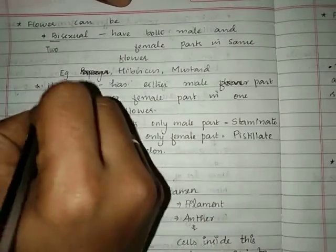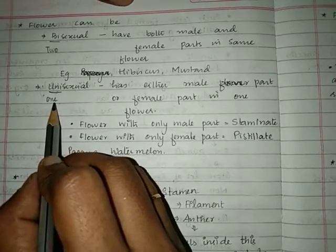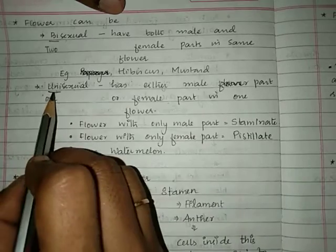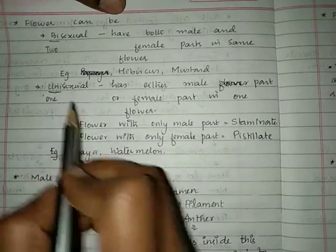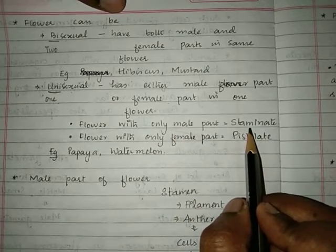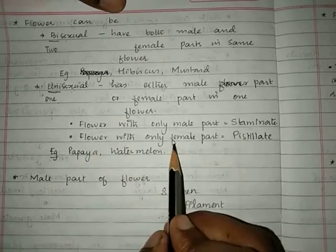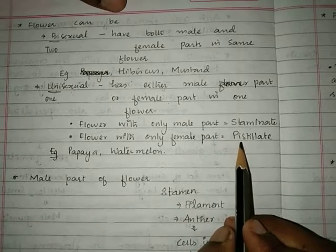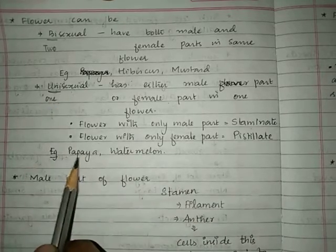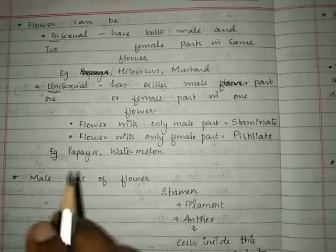Unisexual flowers have only one sex in a single flower — either the male part or the female part. The flower with only the male part is called a staminate flower because it has only stamens. Flowers with only the female part are called pistillate flowers. Examples of plants with unisexual flowers are papaya and watermelon, which have separate male flowers and separate female flowers.